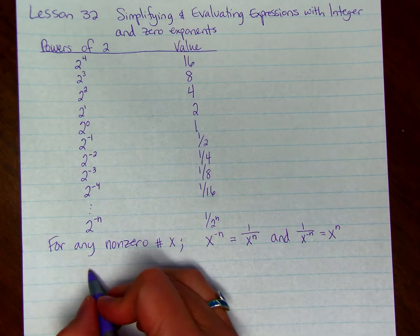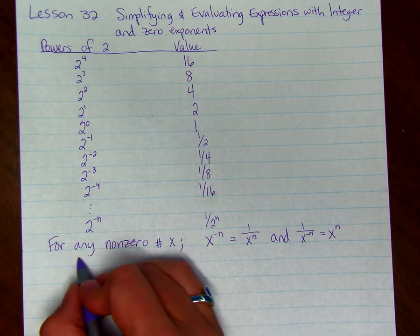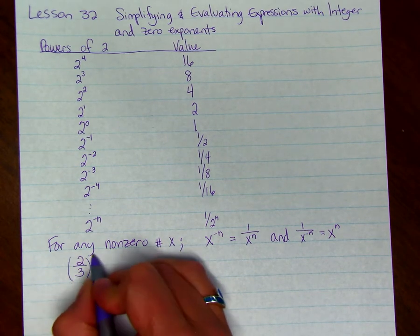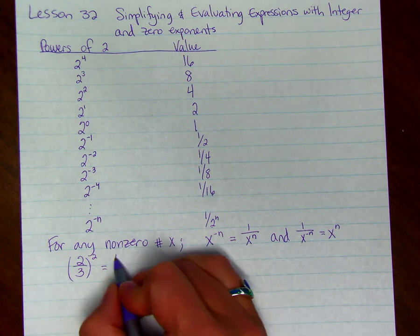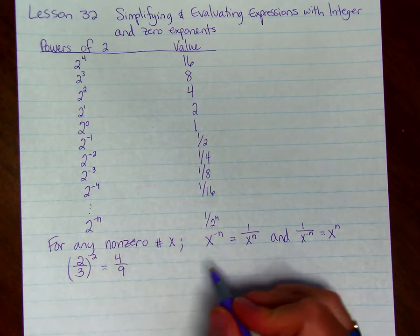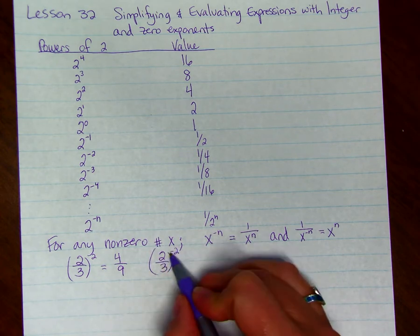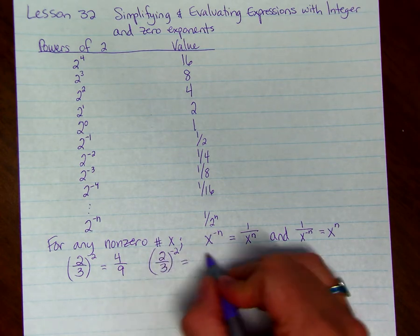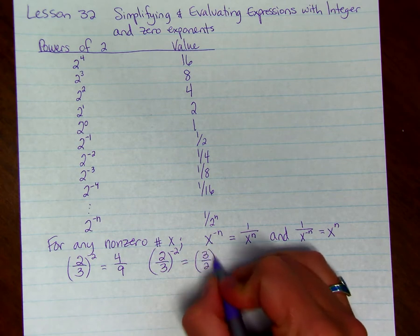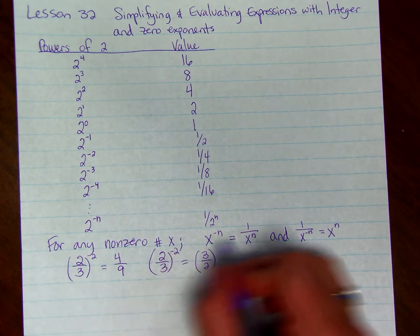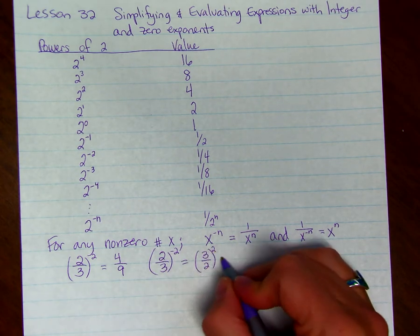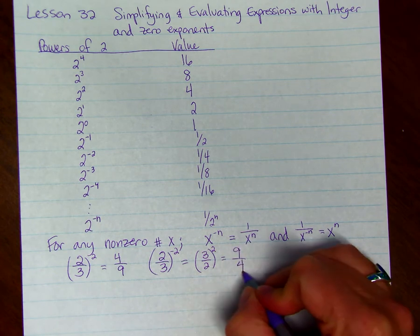So if we have 2 thirds squared, that's just equal to 2 thirds times 2 thirds, or 4 ninths. Now if we had 2 thirds to the negative 2, the negative means take the reciprocal of 2 thirds. Once you take the reciprocal, it's no longer negative, so it's just going to be 3 halves squared, which is 9 fourths.